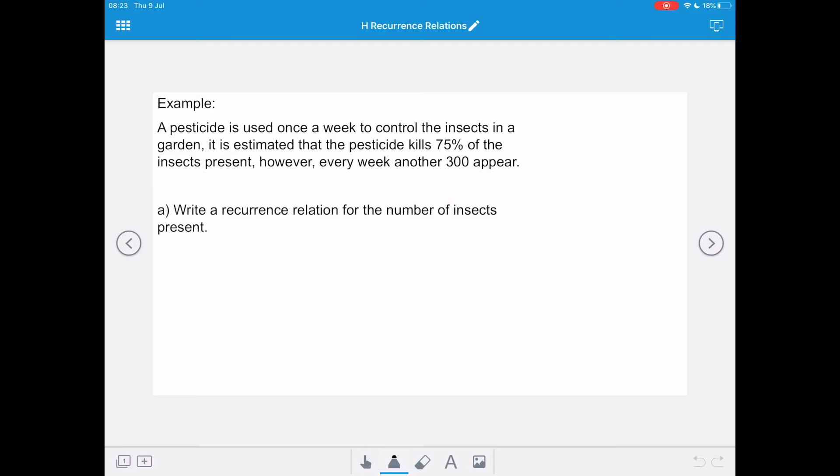So let's look at an example. A pesticide is used once a week to control the insects in a garden. It's estimated that the pesticide kills 75% of the insects present. However, every week, another 300 appear.